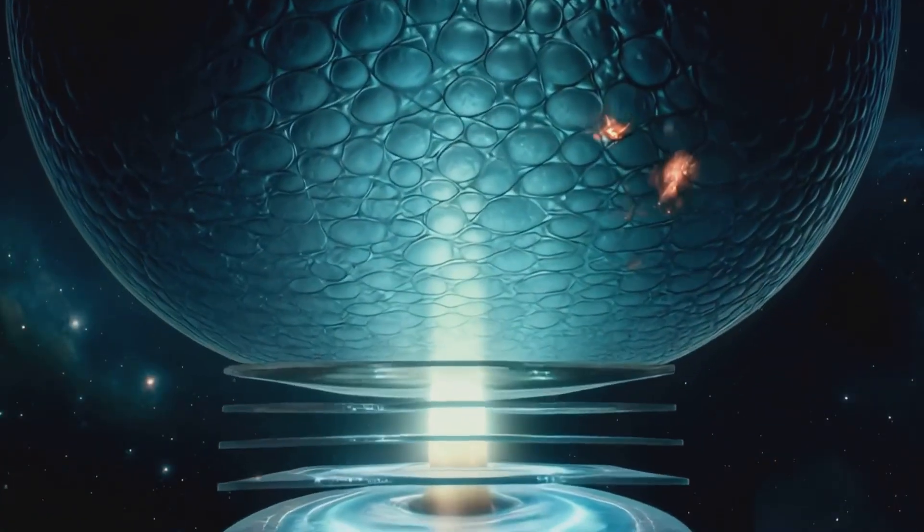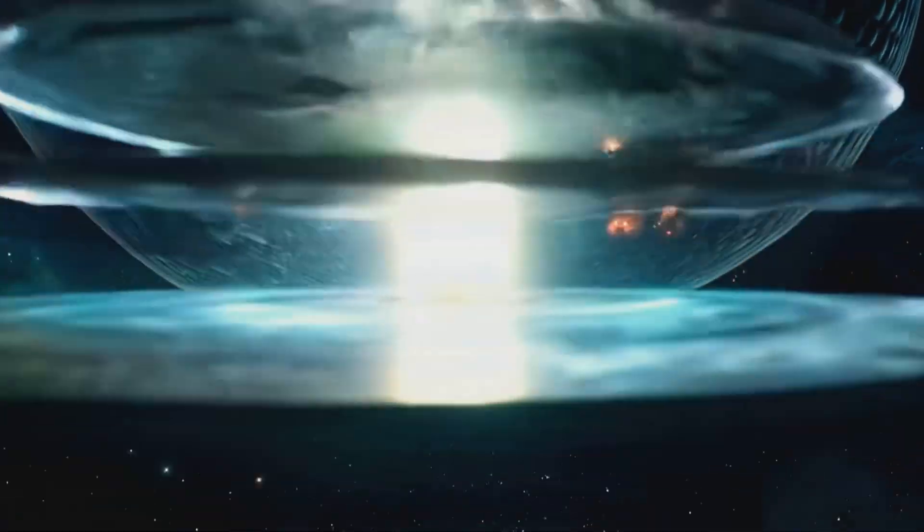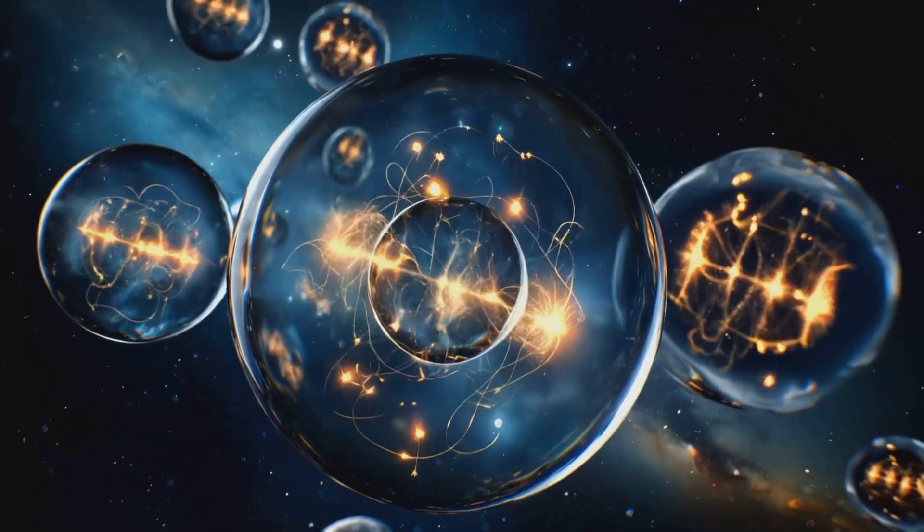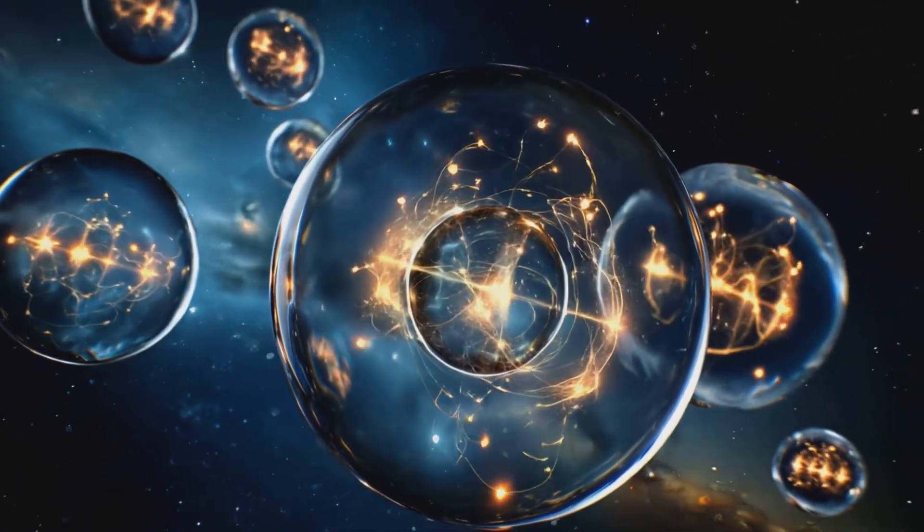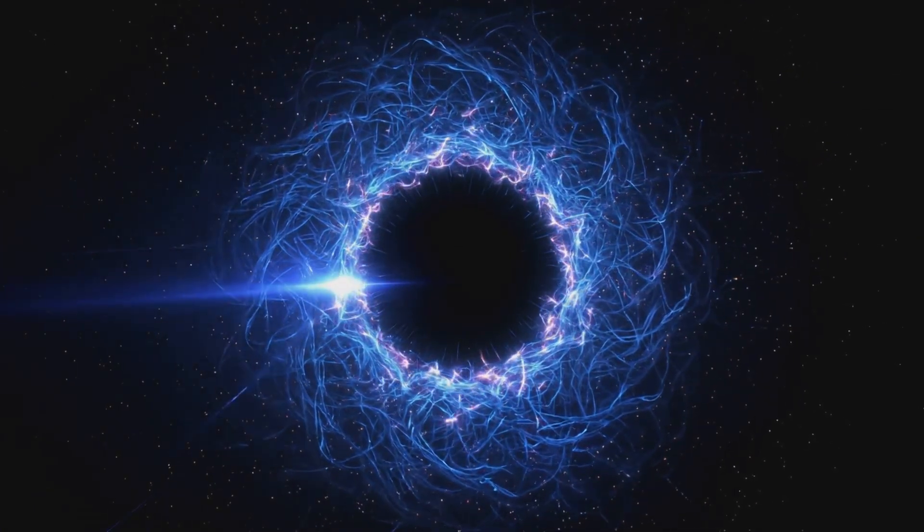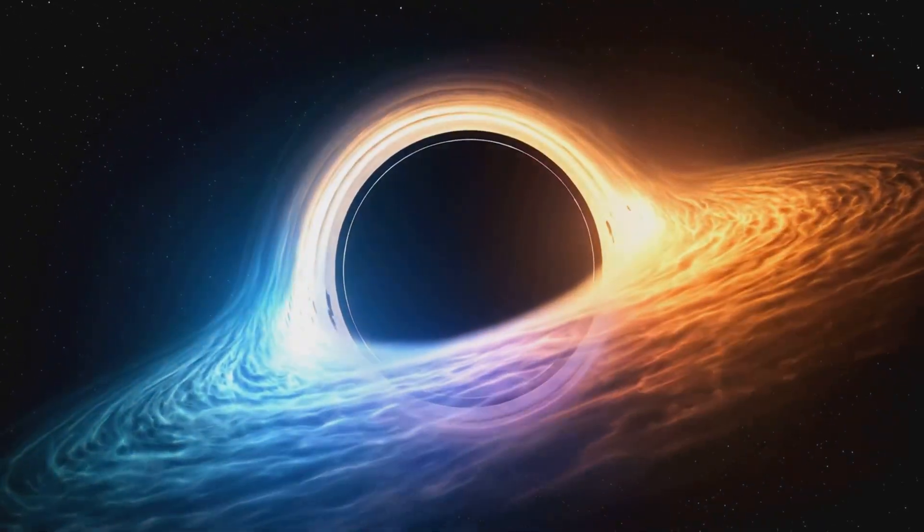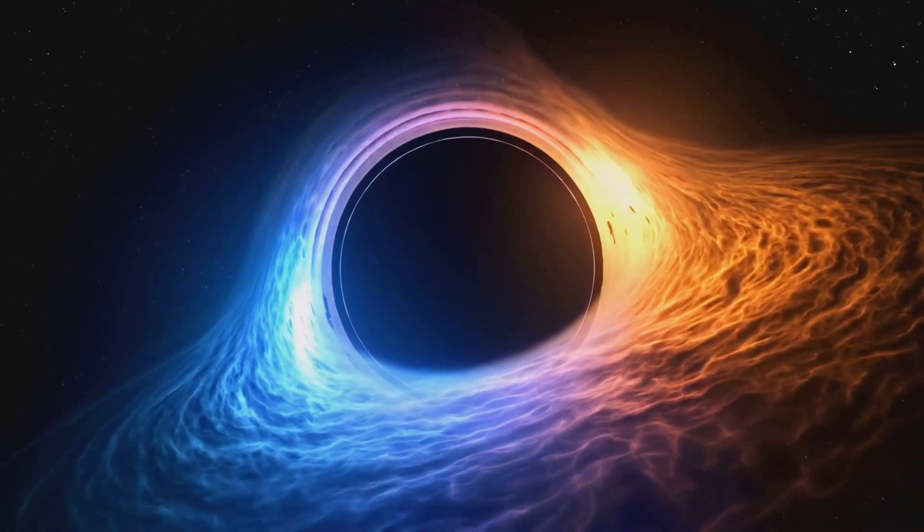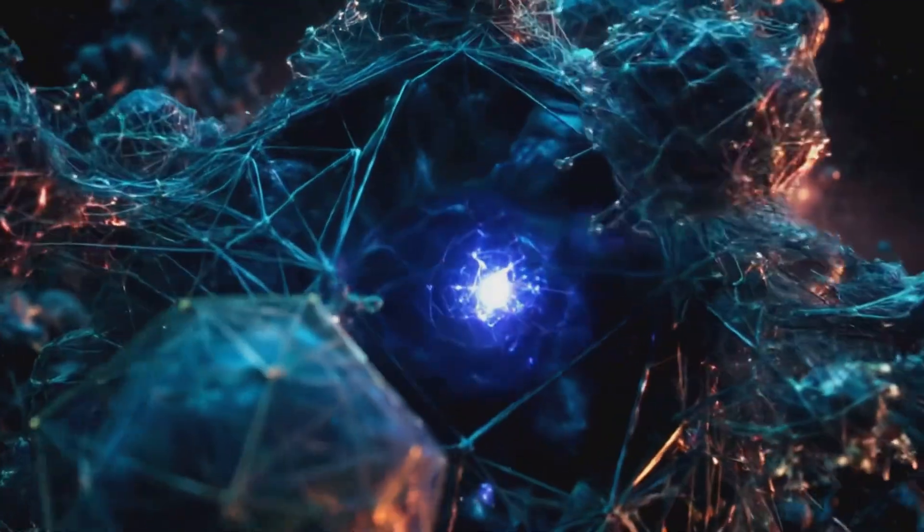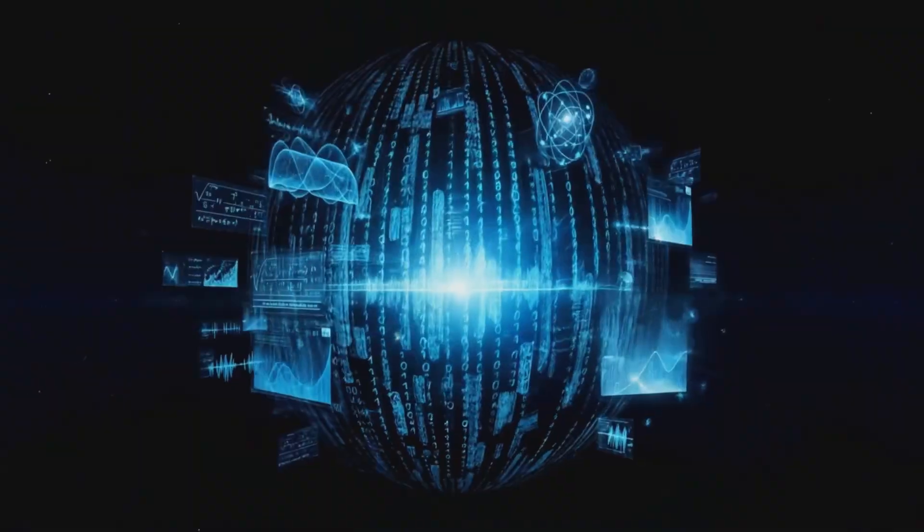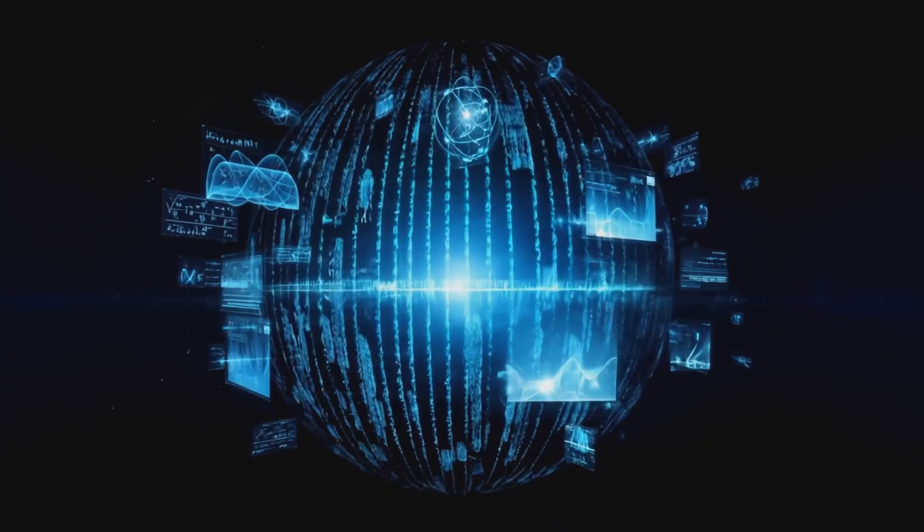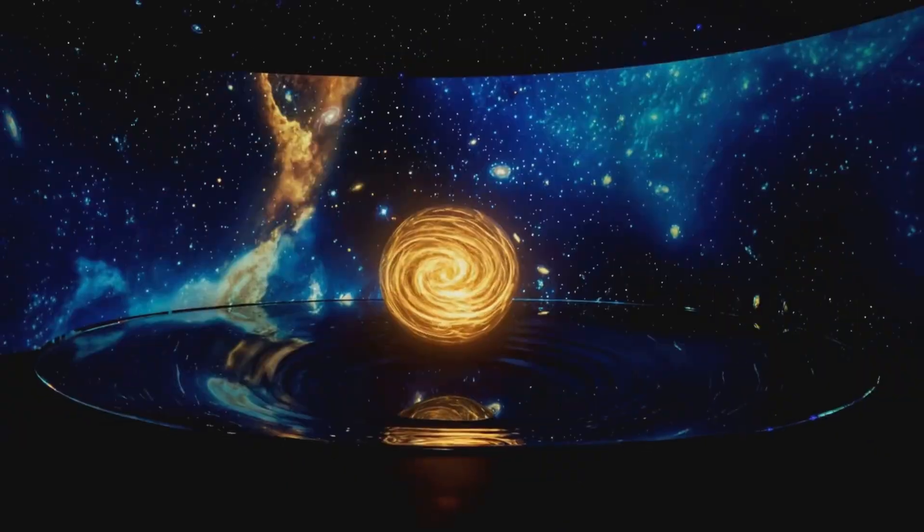The event horizon is not a single surface. It is composed of stacked layers of probability, like a lens focusing reality. Each layer refines the projection, transforming raw quantum information into the structured experience of space and time. The singularity is blurred potential. The event horizon is focused reality. This means that all possible histories exist in superposition, but we only experience one at a time. The probabilities shift and collapse based on interference, forming the continuous flow of time.